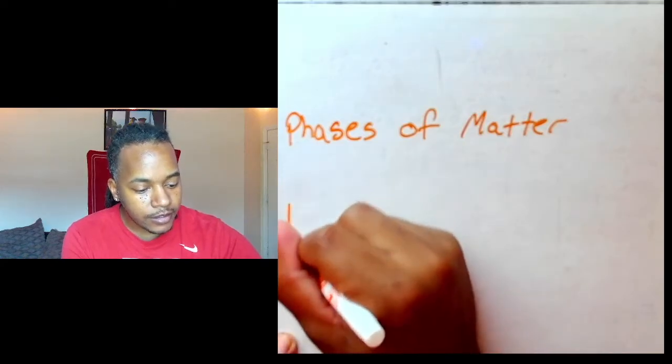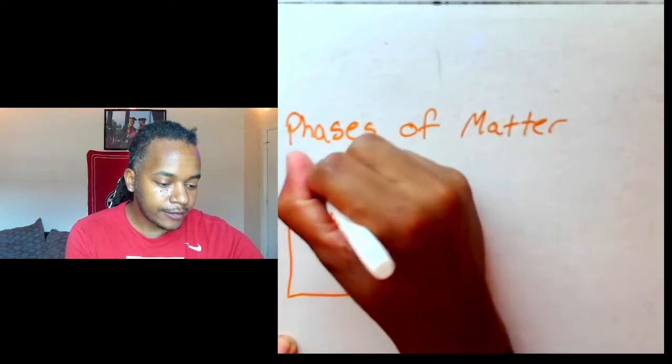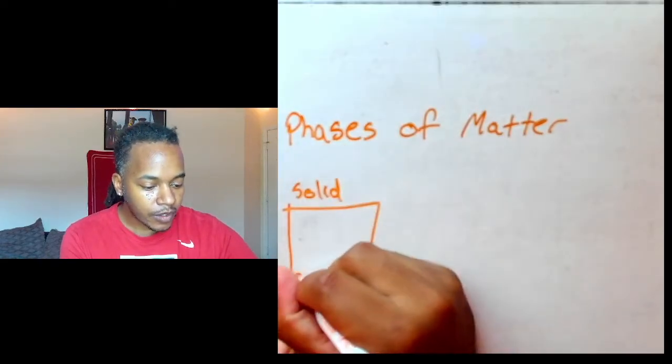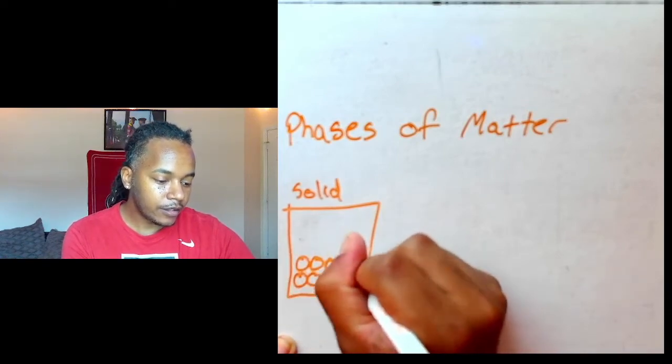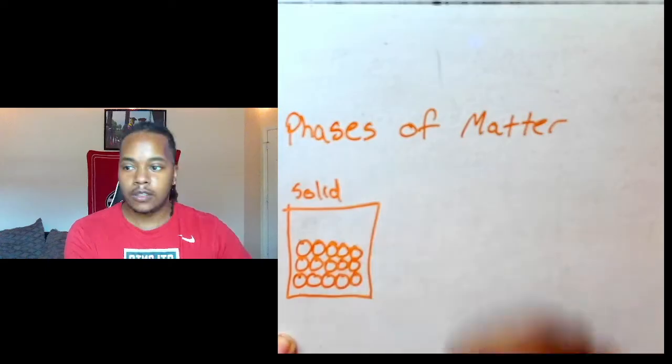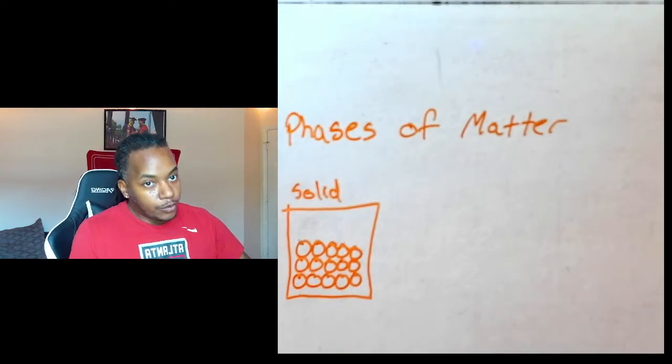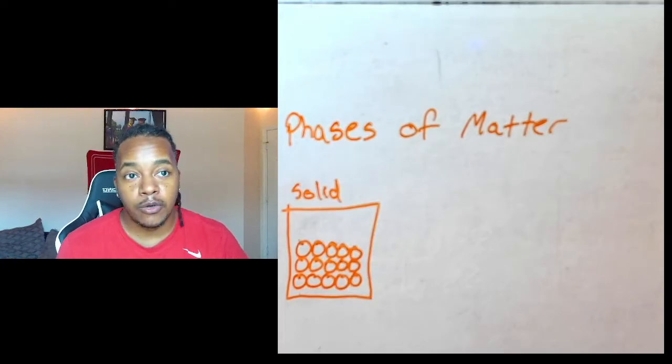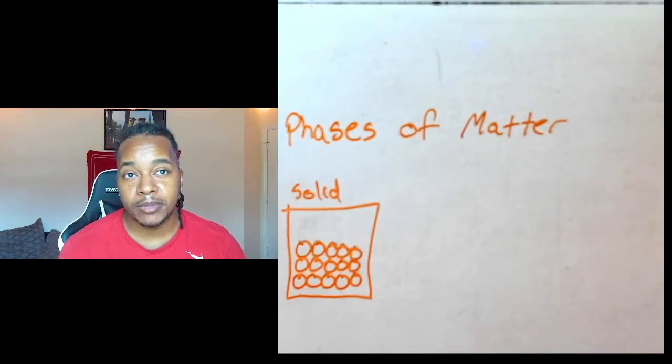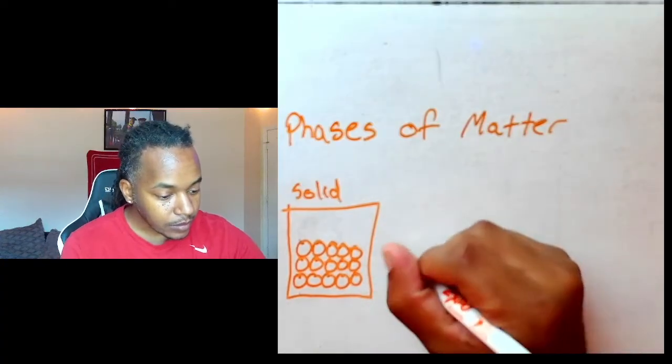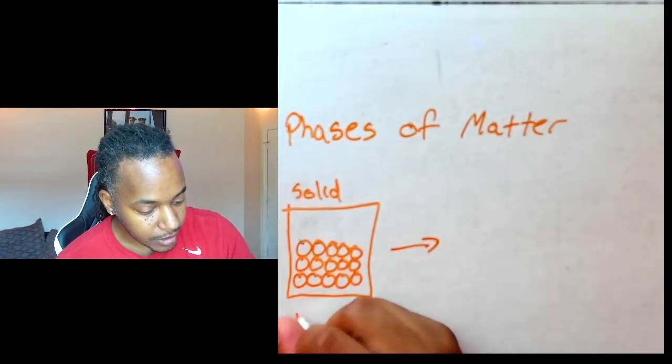So in a solid, that's when your particles will be very close together. It has no room to move, so it has a uniform shape with no motion. It means the shape doesn't change unless something happens, such as adding heat to it.